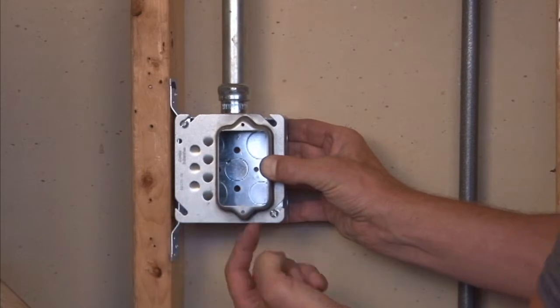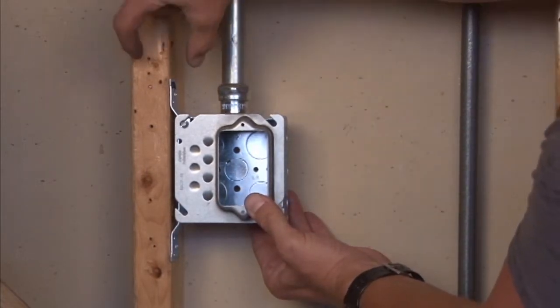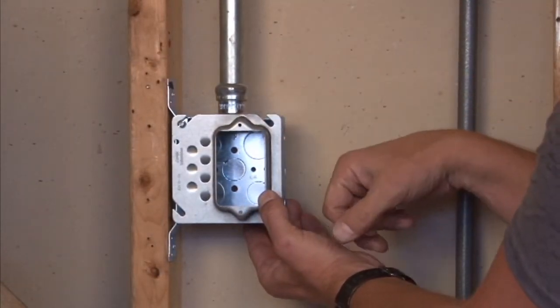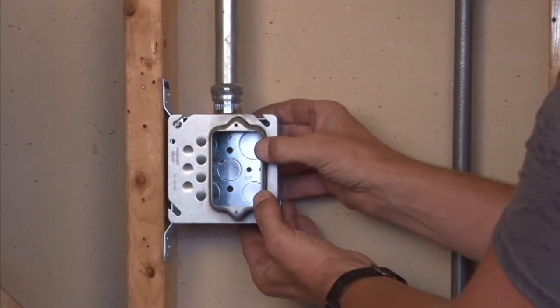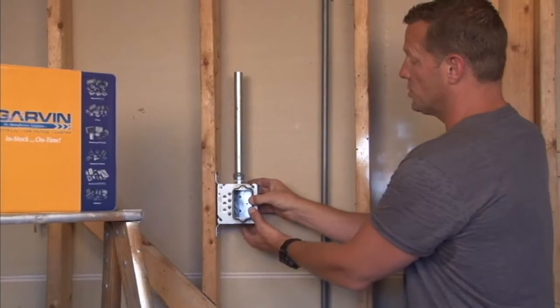It adjusts where you install your device away from decorative finish trim molding and allows a switch, outlet, or receptacle to be installed quickly and easily without interfering with the decorative trim molding on the finished wall surface.